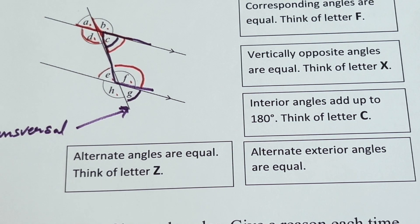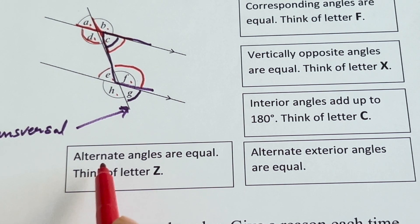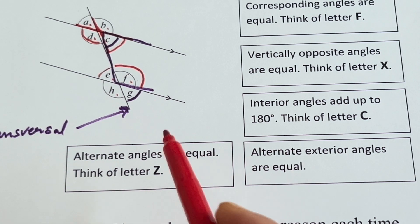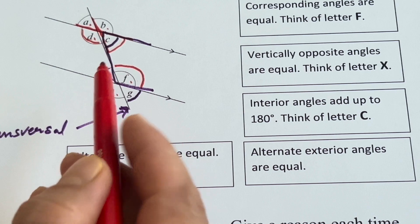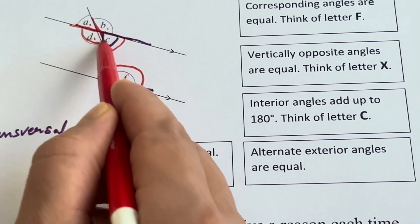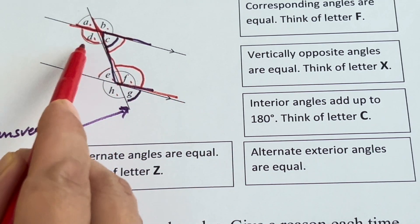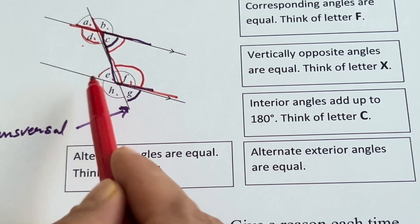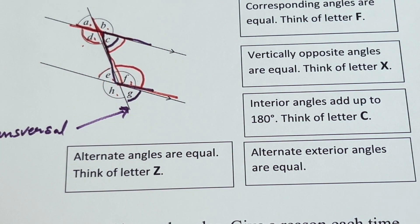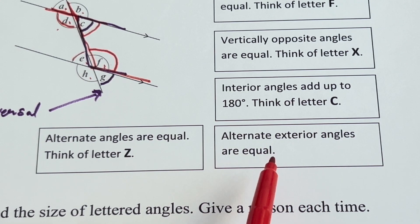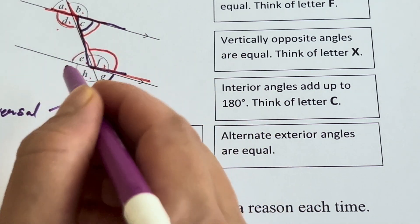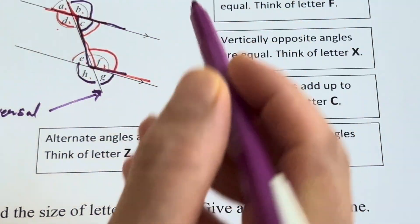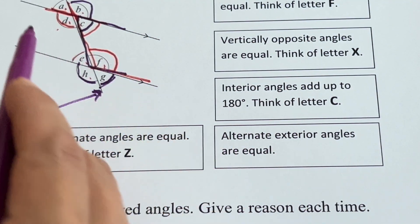The fourth point says alternate angles are equal — think of the letter Z. So D and F are alternate angles; similarly C and E are alternate angles, and they are equal. Alternate exterior angles are also equal: angle H and angle B, and similarly angle G and angle A, are called alternate exterior angles.